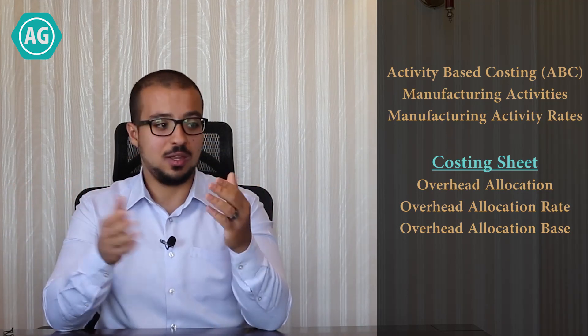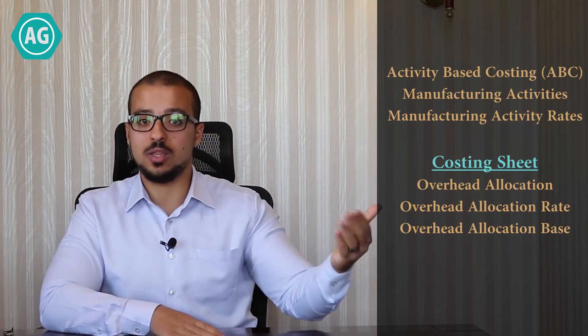Now we understand activity-based costing, manufacturing activities, manufacturing activity rates, overhead allocation, overhead allocation base, and overhead allocation rate. In the coming video, I'm going to explain how to make sure we never miss any manufacturing expense, along with the meaning of overabsorption, underabsorption, cost centers, and cost pools.